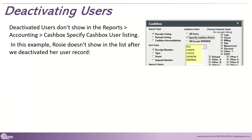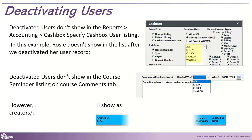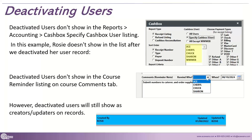Deactivated users are also not going to show in your reporting areas — like Cashbox, which is a great reporting tool for figuring out how much money has come in. Once we deactivate Rosie, she would not show in Cashbox anymore. They're also not going to show in things like course reminders, because why would you want to remind someone who's inactive? They will still show as people who created or updated a record, so six months from now you can still see that Rosie made a change to a course record.